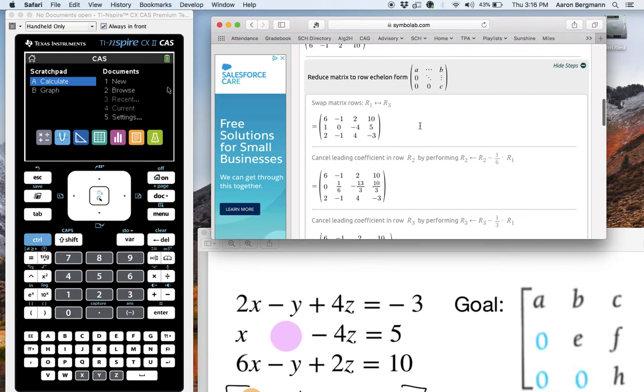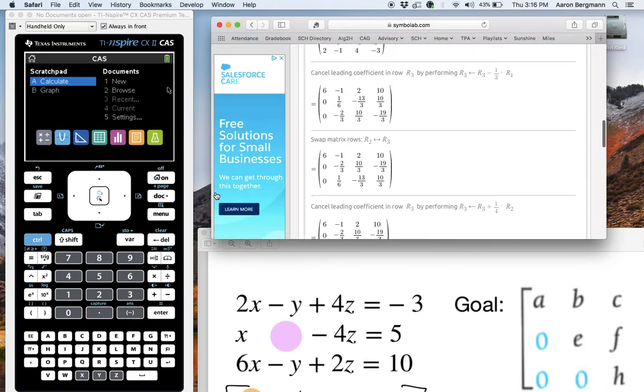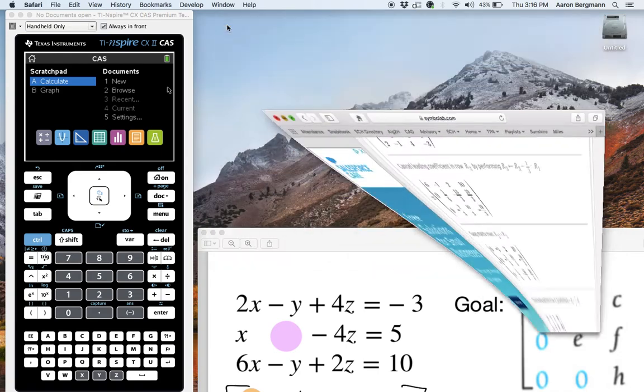It talks about swapping rows, taking one row, multiplying it by a number, and adding it to another row, and that kind of thing, until eventually it gets the answer. So that's that.